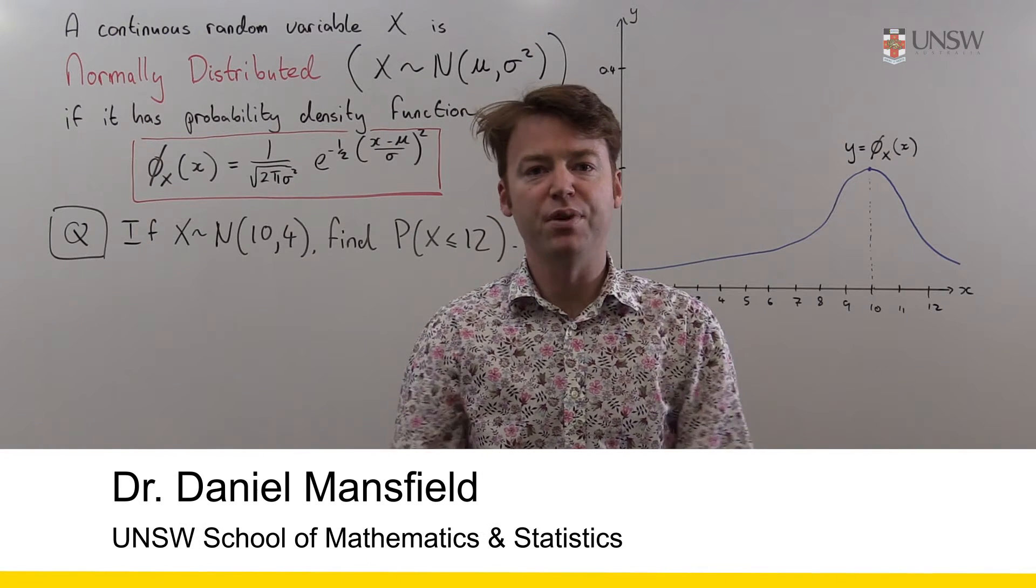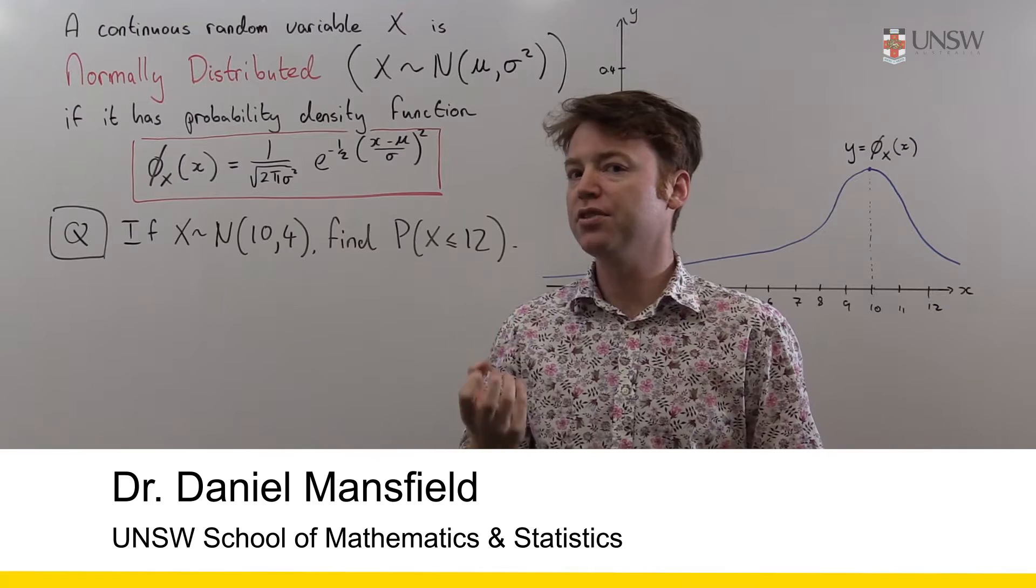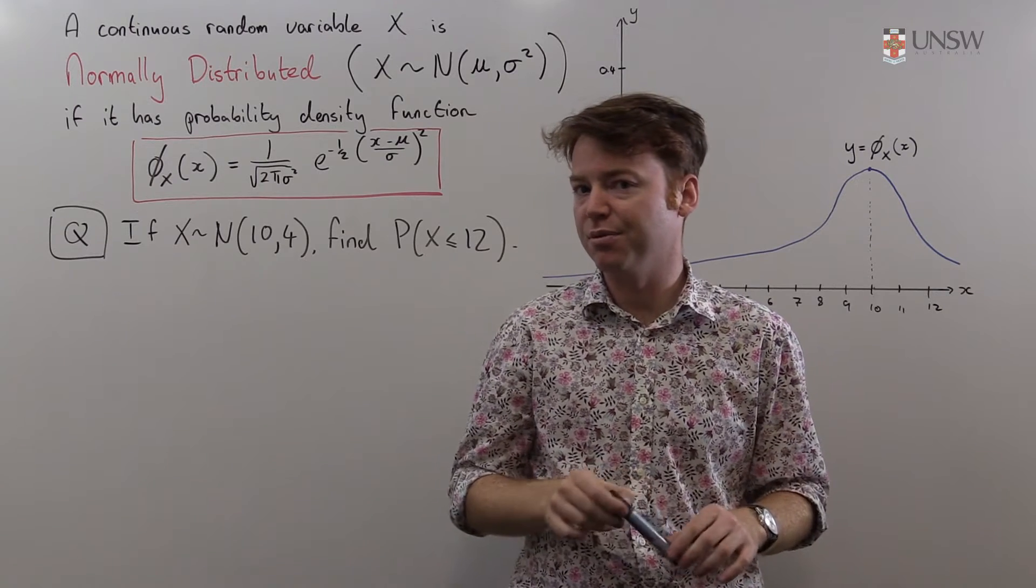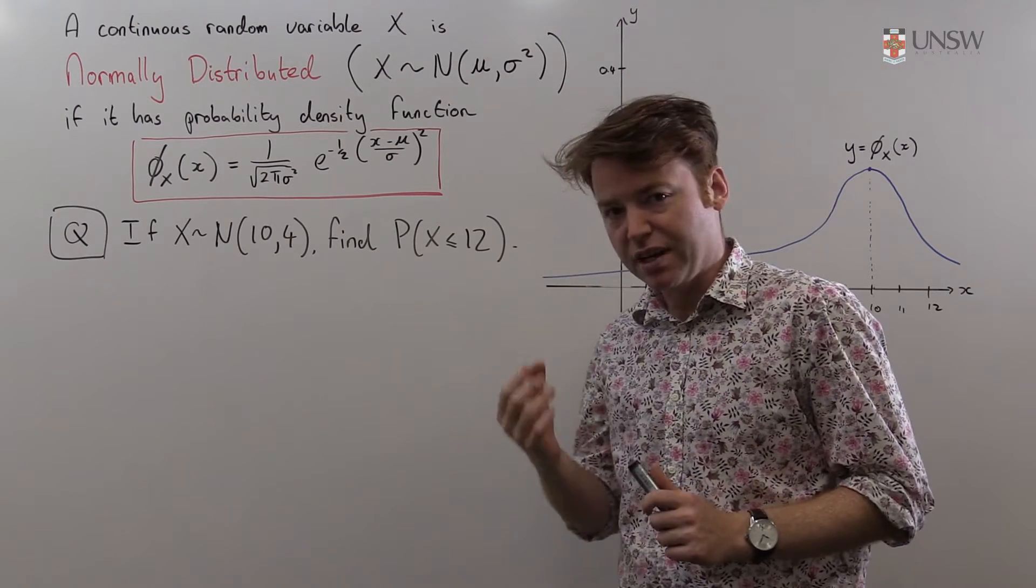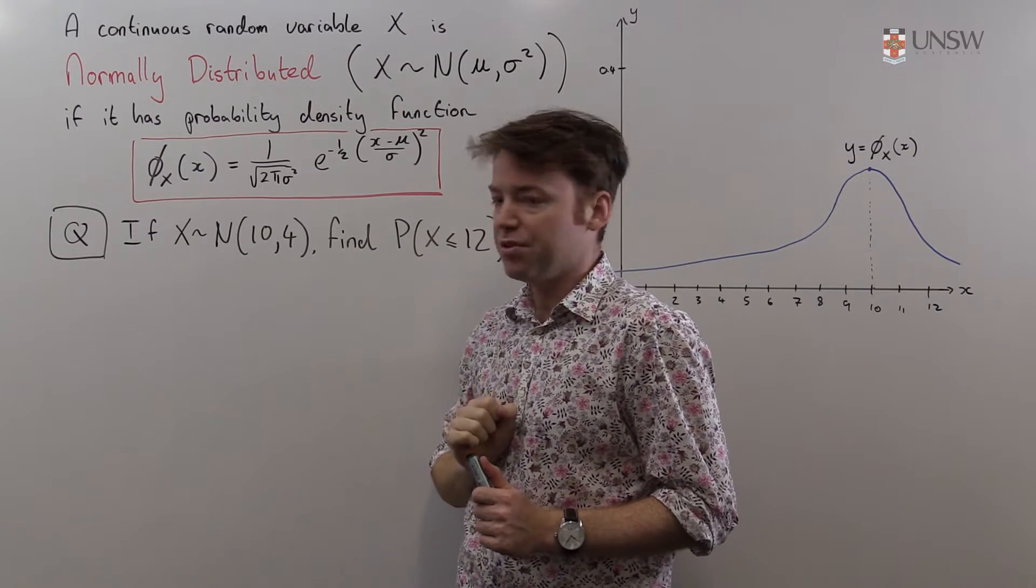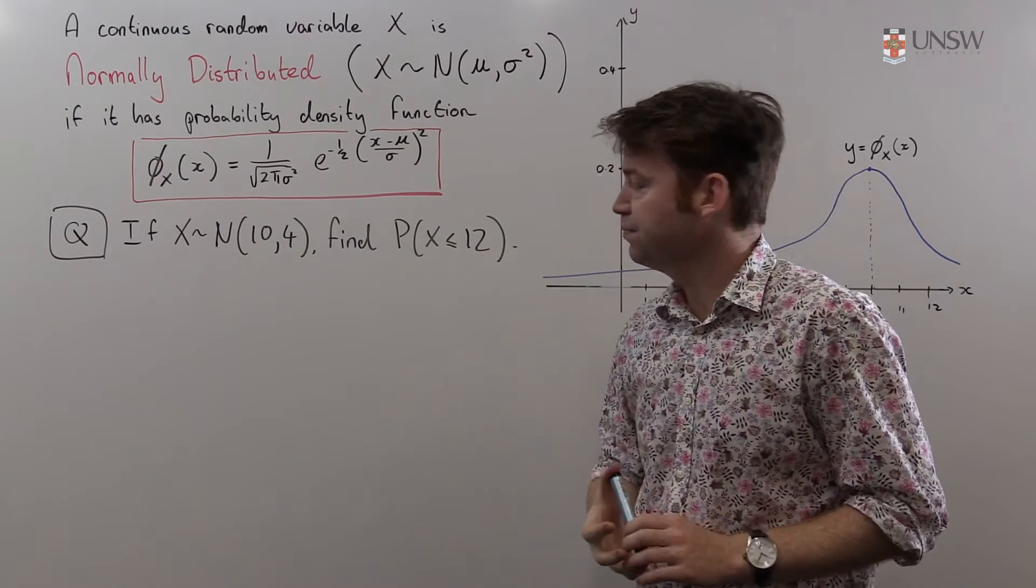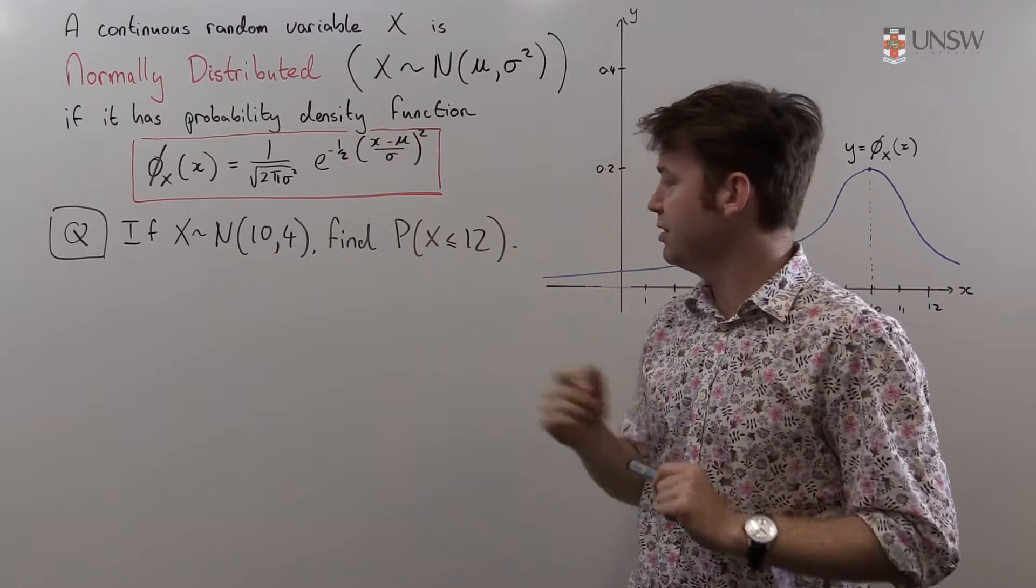Hello, in this question we're asked to calculate some probabilities of a normally distributed continuous random variable. The question, as it's stated, is very simple. Suppose you have a random variable which is normally distributed with expected value 10 and variance 4, find the probability this variable is less than 12.